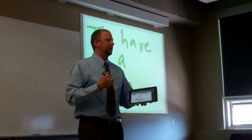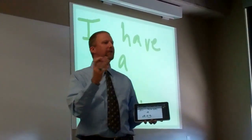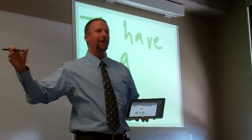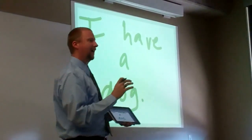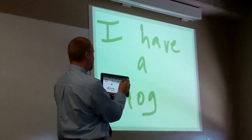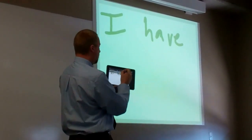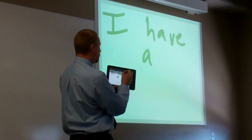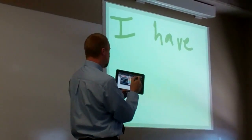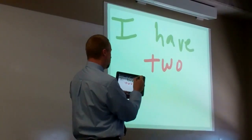One of the cool things about the timeline: normally in a program like Word, if you undo a bunch of times and then put in a new word, you can't redo the rest of the stuff you did before. But Doceri does have a way to do that. You can step back through the timeline and see it erasing as you go. I'm going to undo the 'A' and, just for illustration purposes, change this to red.